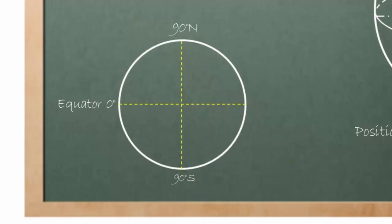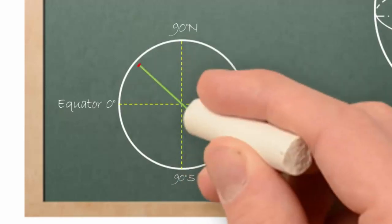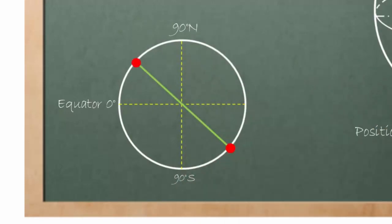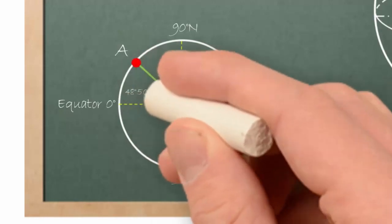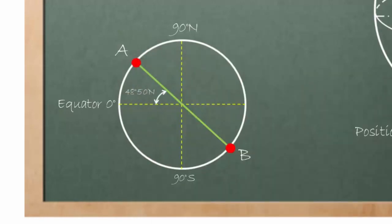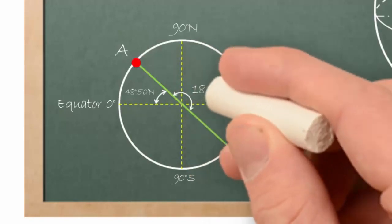And here is the north pole. And south pole. Here is our initial position A and the opposite position B. The angle here is 48 degree, 50 minute. Here the angle is 180 degree.